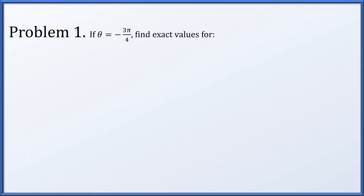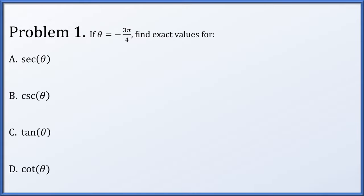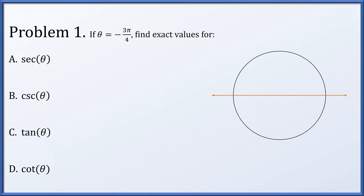In problem 1, we're given the angle theta to be negative 3π over 4, and we're going to find exact values for the secant, cosecant, tangent, and cotangent of theta. Here's our standard unit circle along with the x-axis. The angle is negative 3π over 4, which means starting from the positive x-axis, we're going to rotate clockwise 3π over 4 and end up somewhere around here.